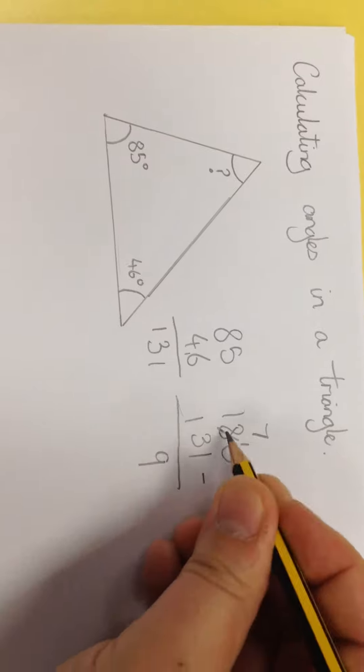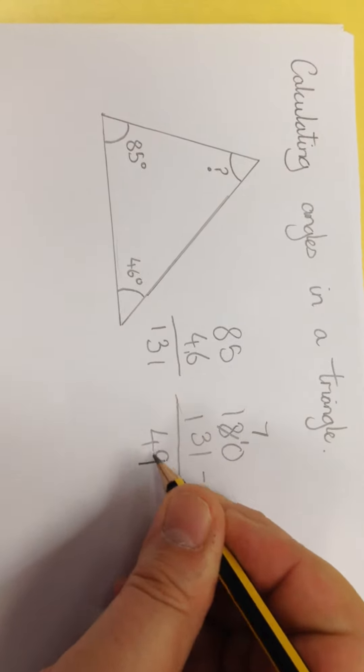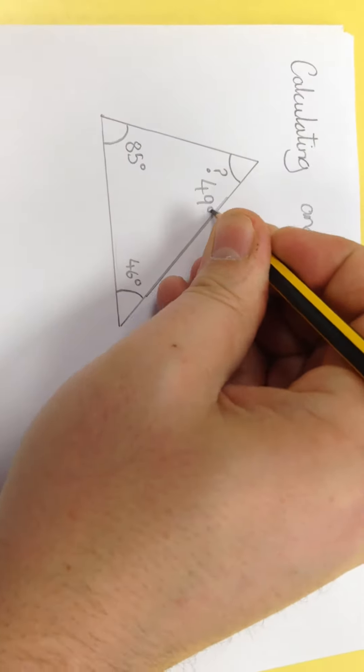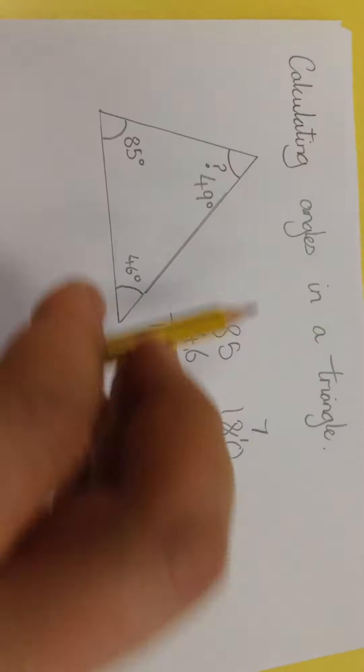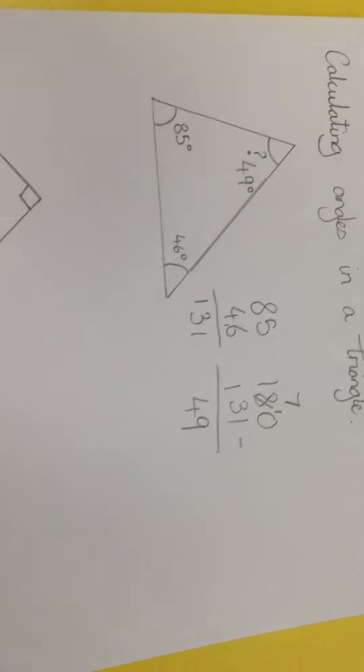10 take away 1 is 9. 7 take away 3 is 4. 1 take away 1 is 0. So I've got 49. So now my missing angle is 49 degrees. All three of them will add up to 180.